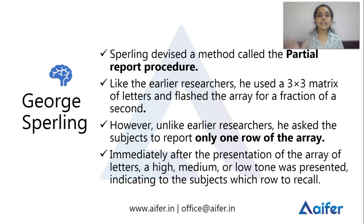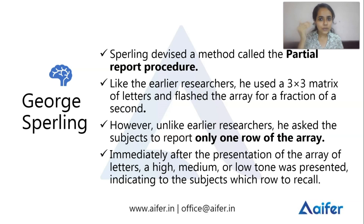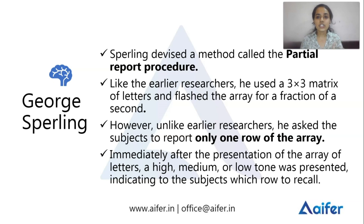In the partial report procedure, a 3x3 matrix is shown and there are 3 lines with 3 different tones. After the matrix disappears, a tone signals which line to reproduce — high, medium, or low tone for the first, second, or third line respectively. Subjects could accurately reproduce whichever line was cued.